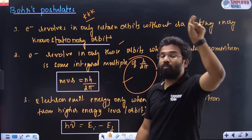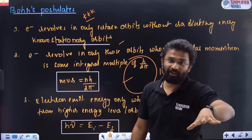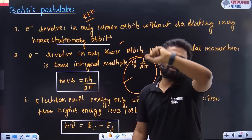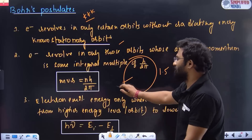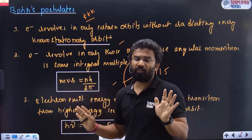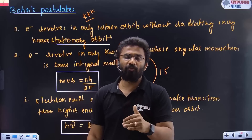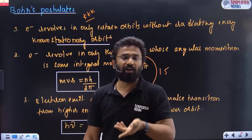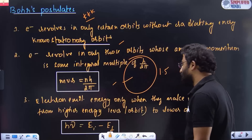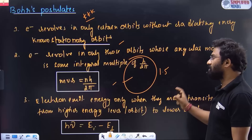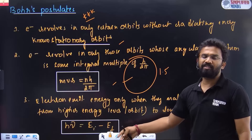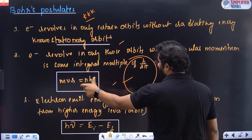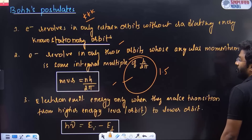Electrons revolve only in those orbits with angular momentum equal to nh by 2π. Third postulate: electrons emit energy only when they make a transition from one energy level to another. Higher to lower — they emit. The energy of the emitted radiation equals the difference in energy levels: E = Ei minus Ef. If you write these three postulates in the board exam, you will definitely get full marks.